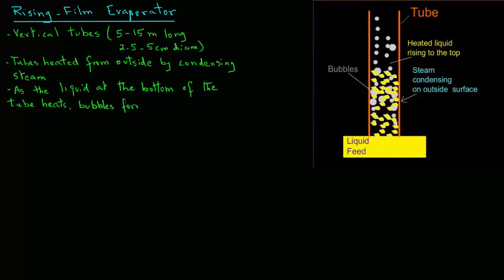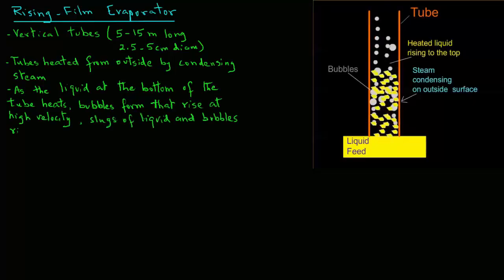bubbles will form that rise inside the tube at high velocity. Typically we have slugs of liquid and bubbles rising rapidly to the top of the tubes. The velocity can be very high, up to 100 meters per second.